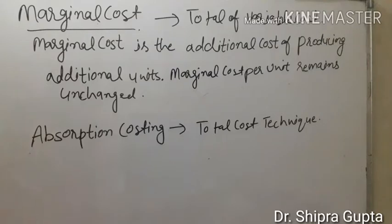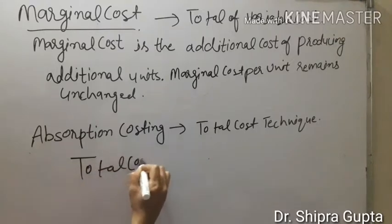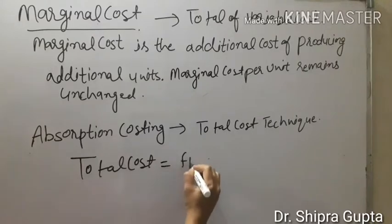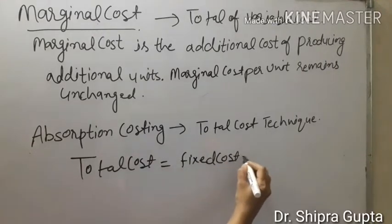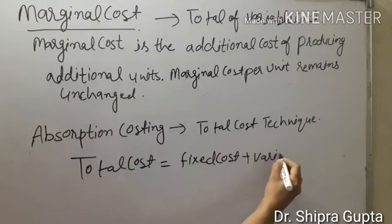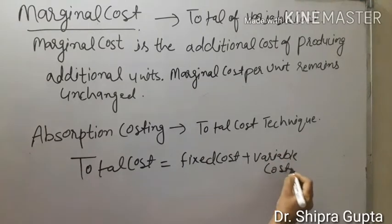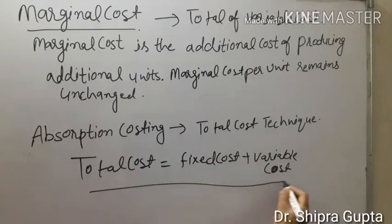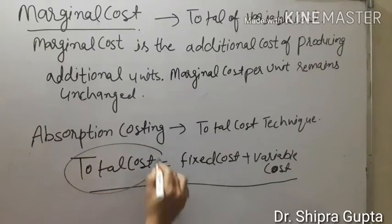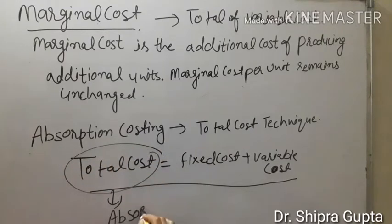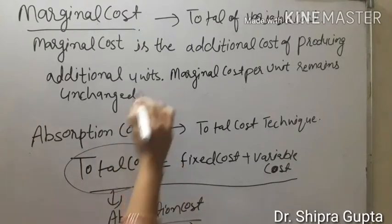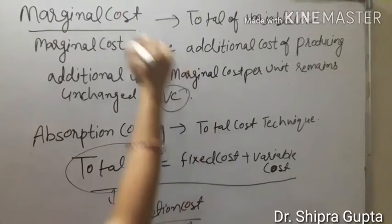And absorption costing — the total cost technique is known as absorption costing. Total cost means fixed cost plus variable cost. The total of these two costs is known as total cost, and total cost is known as absorption costing. We include both fixed and variable costs in absorption costing, but only variable cost is included in marginal cost.